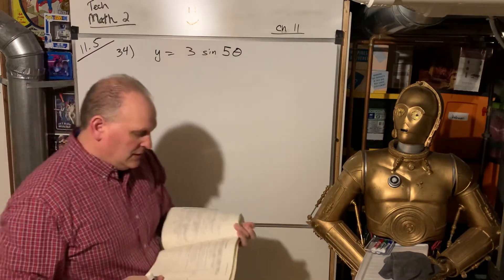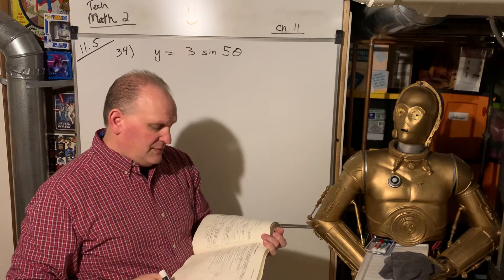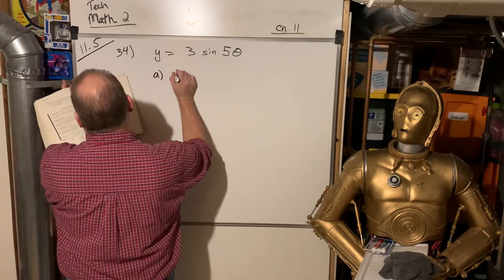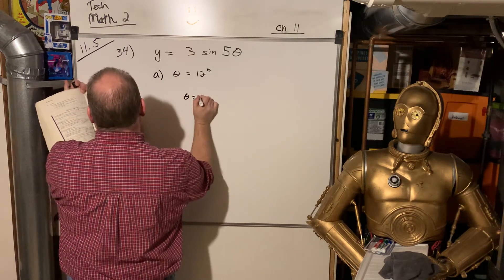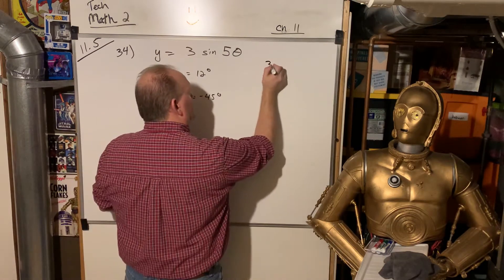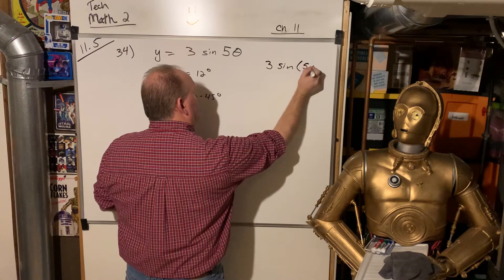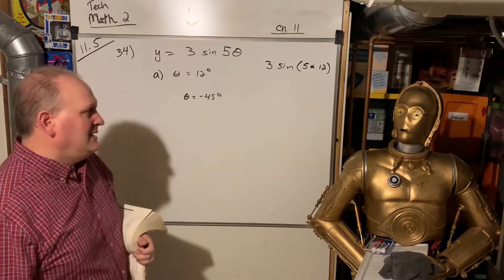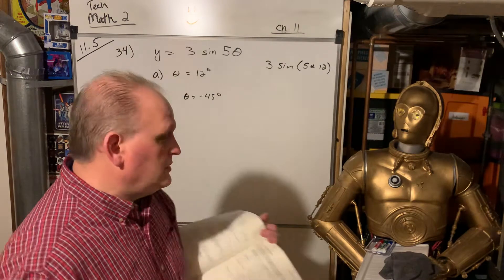They just want us to input that into our calculators, rounded to two decimal places — so hundredths. They want you to find the value when theta is 12 degrees. You're typing 3 sine, then 5 times 12 in parenthesis, or just 60 directly. That will give 2.60.